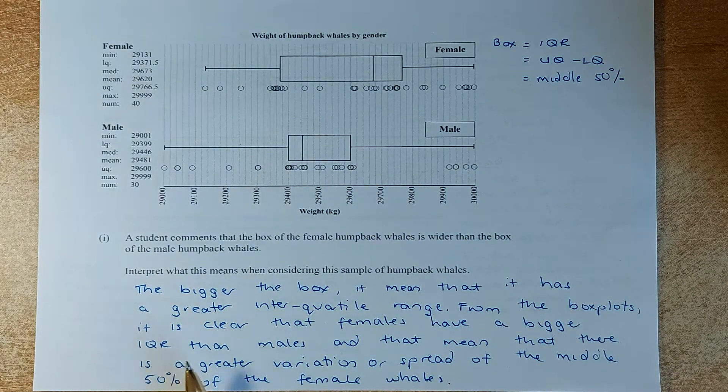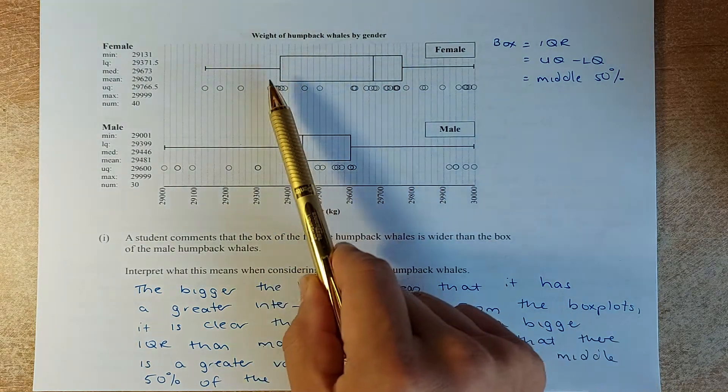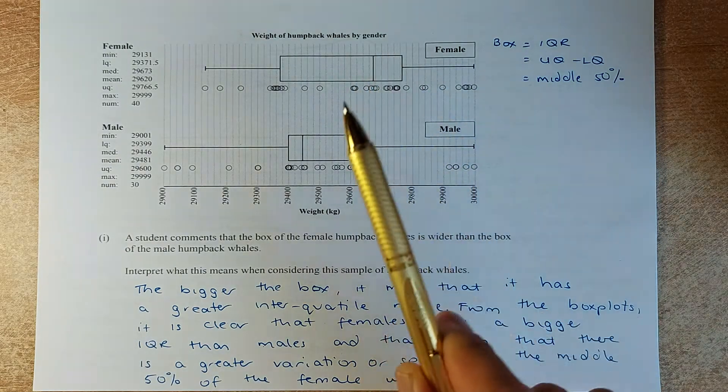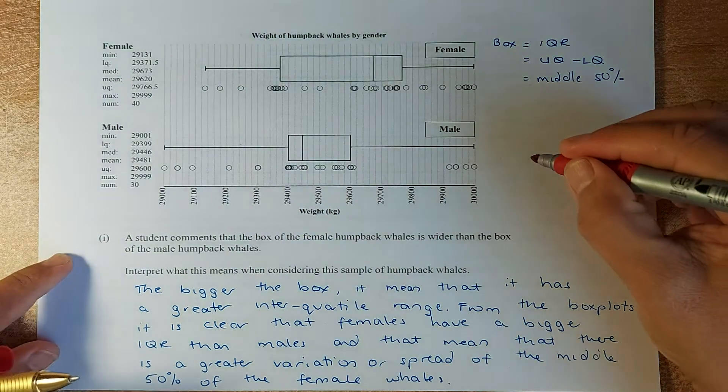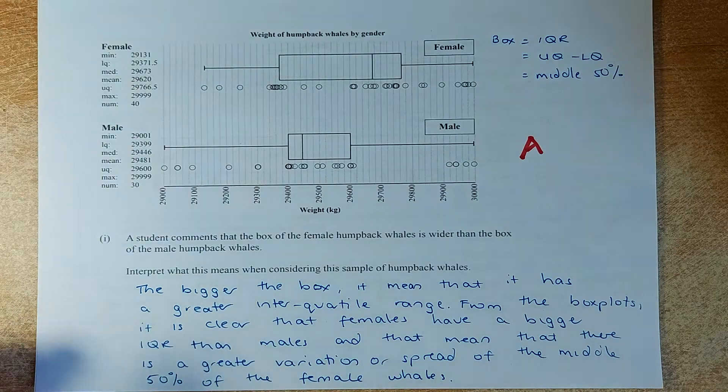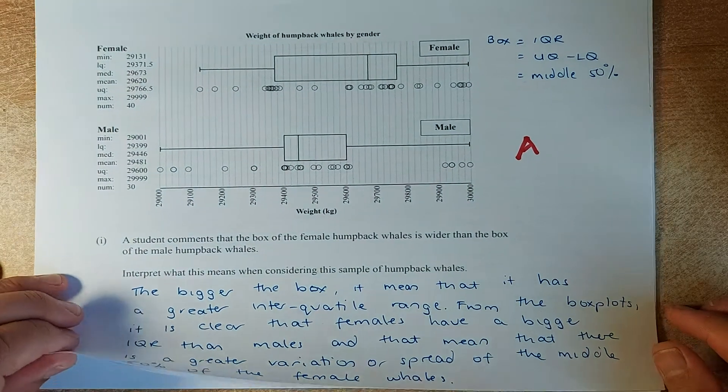If it's bigger, it means that they have a bigger variation. The distribution of the data is bigger in the female, or the spread is bigger in the female when compared to the male. So for that statement, you will get an achieve. The bigger the spread, the bigger distribution, the bigger will be the box.